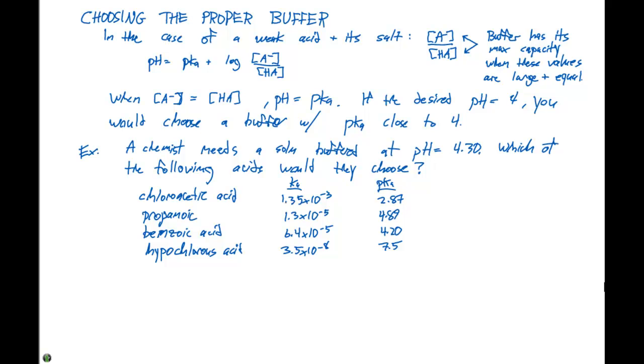In terms of the best choice, our best choice is going to be the acid with the pKa equal to 4.20 because this value is closest to what we're looking for with the pH, which is 4.30. Benzoic acid is the best choice.